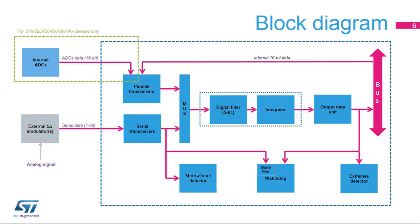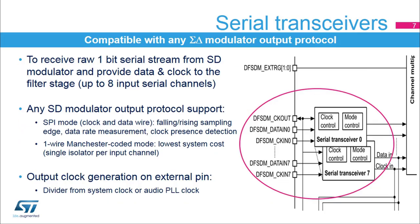The STM32L45X, 46X, 49X, 4AX devices feature parallel inputs from internal ADC. Serial transceivers provide the connection to the external sigma-delta modulator. SPI mode works up to 20 MHz, or the DF-SDM clock divided by 4. There are configurable options including sampling edge selection, data rate measurement, and clock presence monitoring. One-wire Manchester-coded mode, where clock is recovered from the data, works up to 10 MHz, or DF-SDM clock divided by 6.